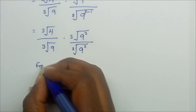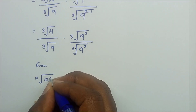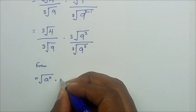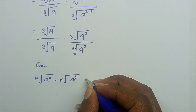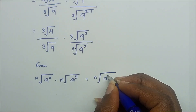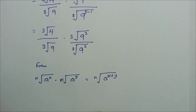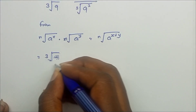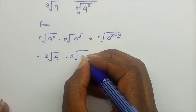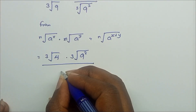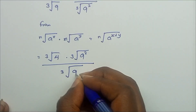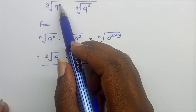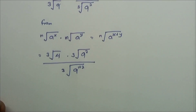From the rule that nth root of a to power x times nth root of a to power y equals nth root of a to power (x + y), we get cube root of 4 times cube root of 9 squared over cube root of 9 to the power 1 plus 2.